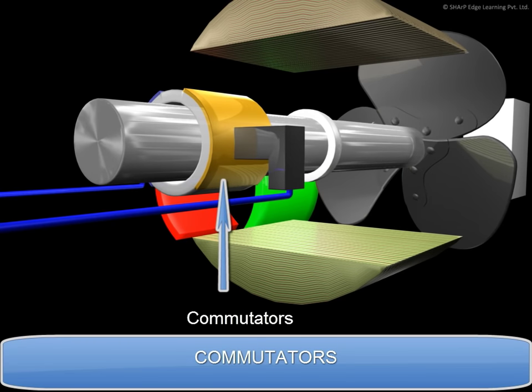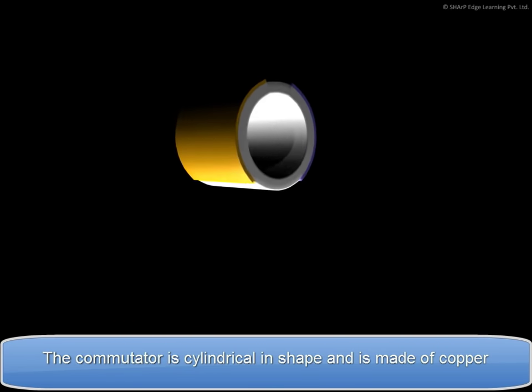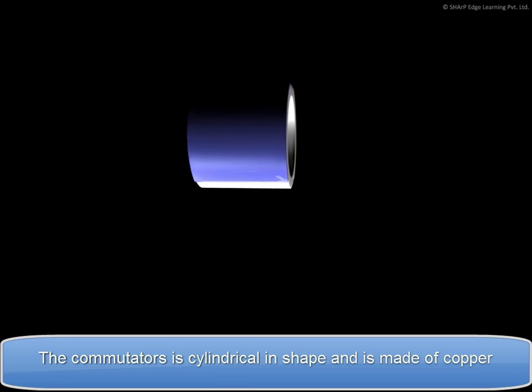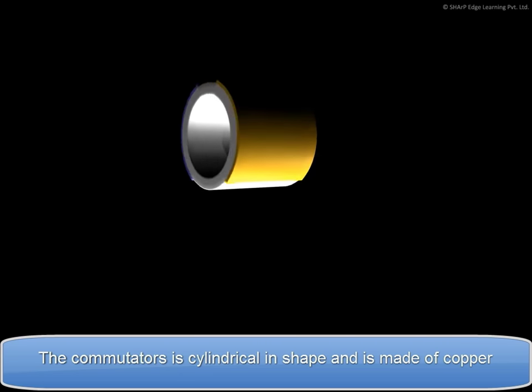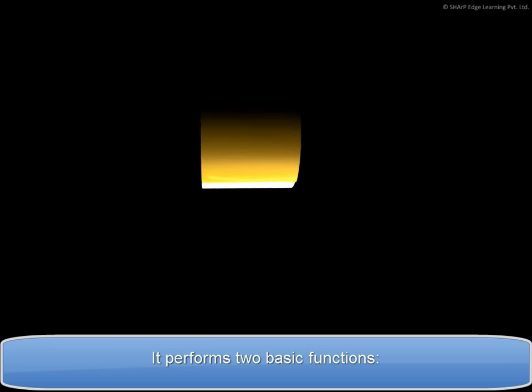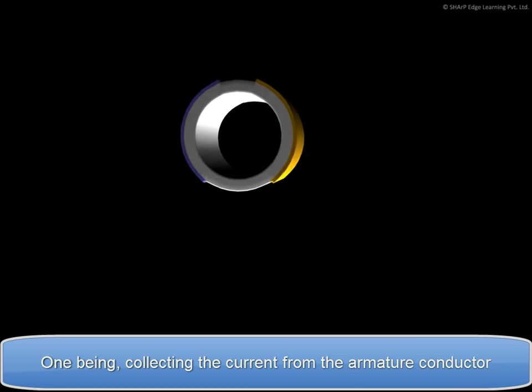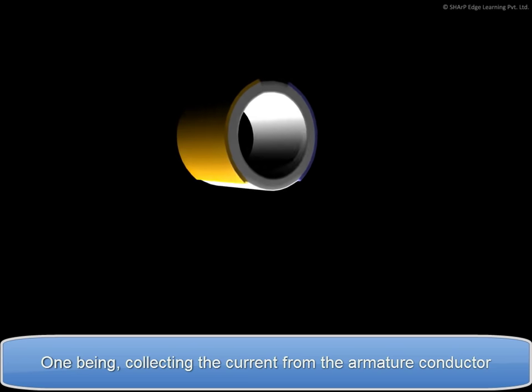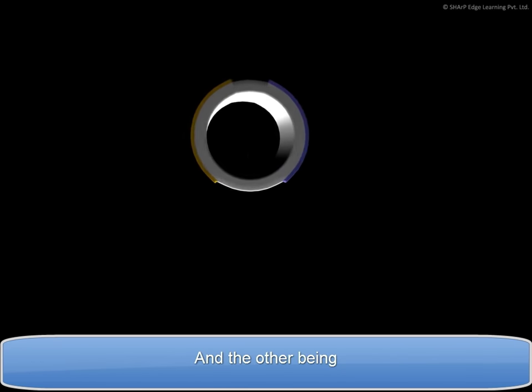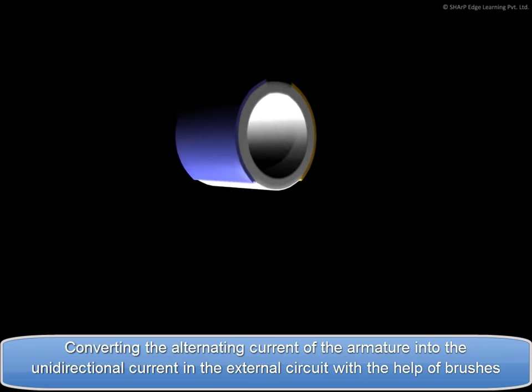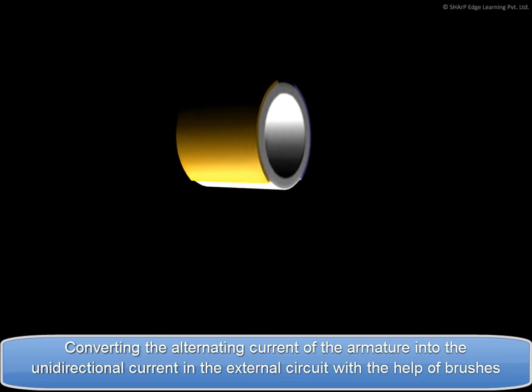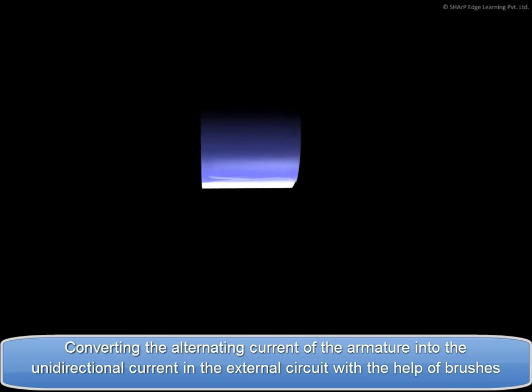Commutator. The commutator is cylindrical in shape and is made up of copper. It performs two basic functions. One being collecting the current from the armature conductor. And the other being converting the alternating current of the armature into the unidirectional current in the external circuit with the help of brushes.